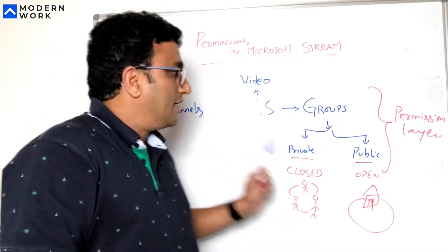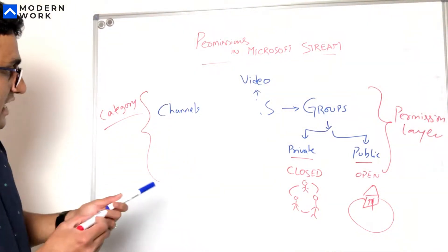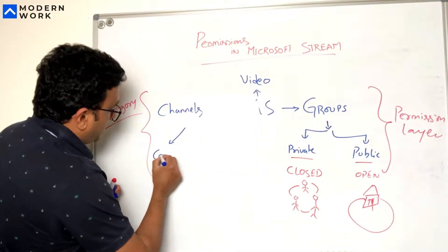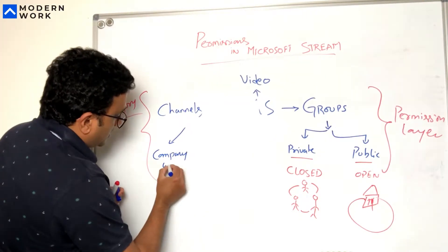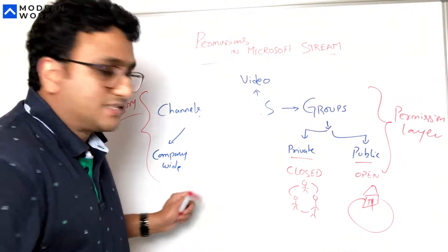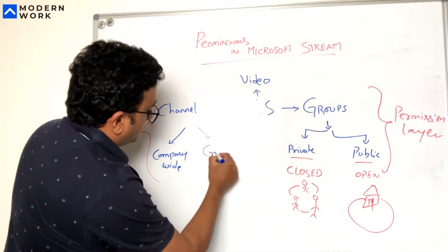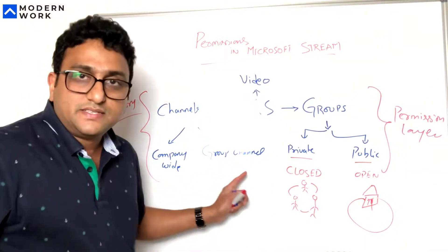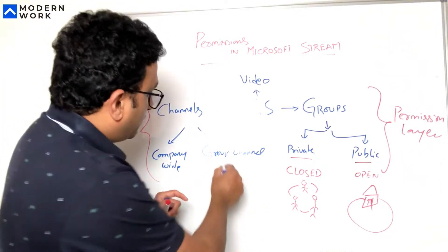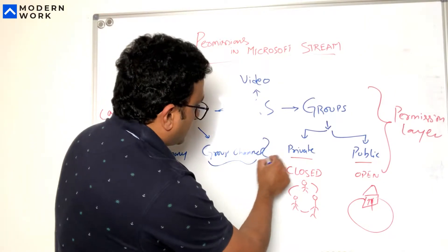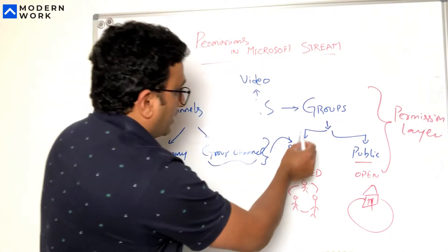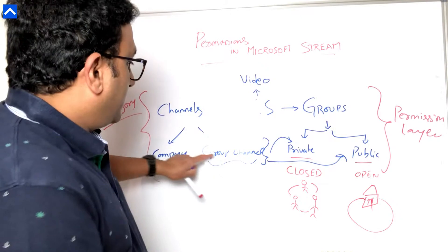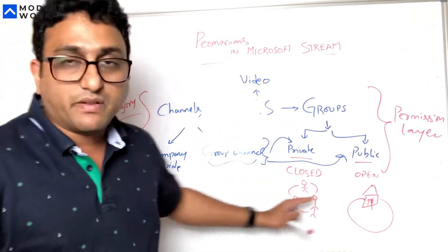Now let's look at the channels. These channels are actually divided into two parts as well. We have a company-wide channel, and then you also have something called group channel. Group channel is, as we learned previously, the group channels can go into either a private group or they can go into a public group. So a group can contain multiple channels as well and a channel can stay within multiple types of groups as well.